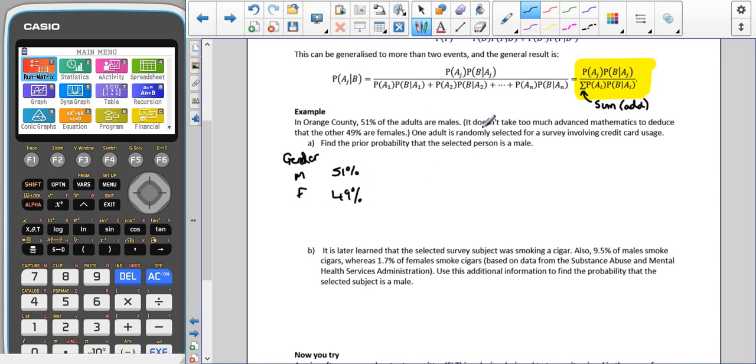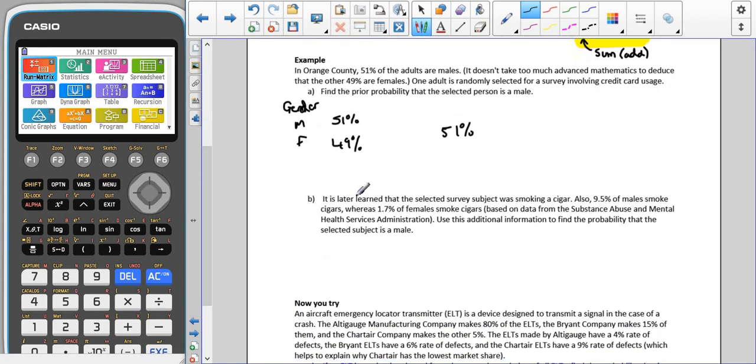So one adult is randomly selected for a survey involving credit card usage. And we're trying to find the probability that the selected person is male. Well, that's easy. That's just our 51%. For part B, though, we find that it was later learned that the selected survey subject was smoking a cigar. So now we're going to have a separate category, which is smoking.